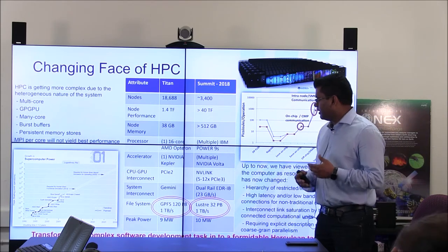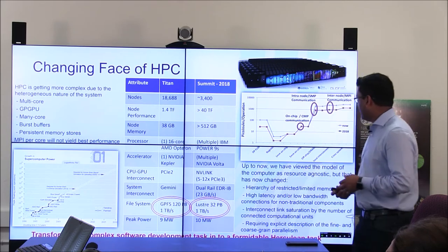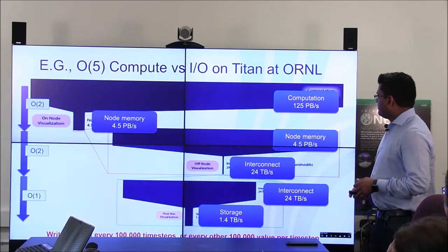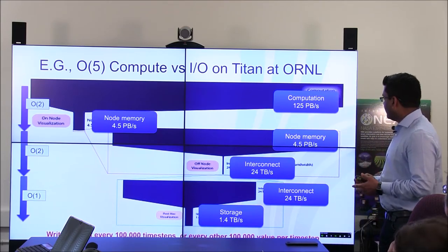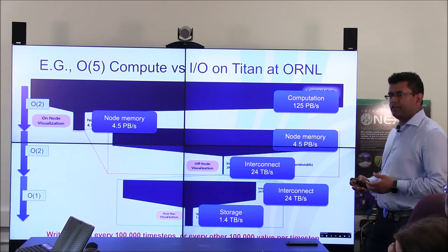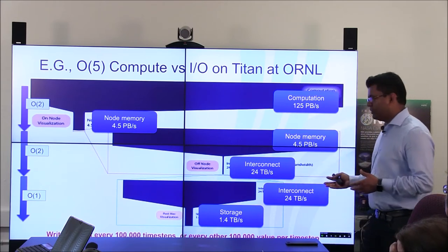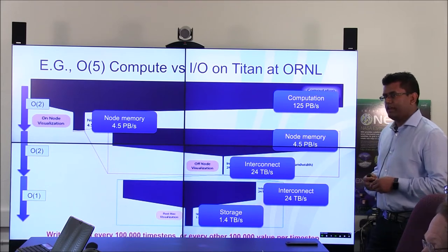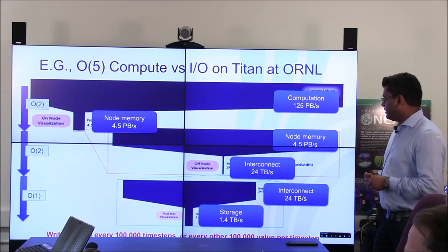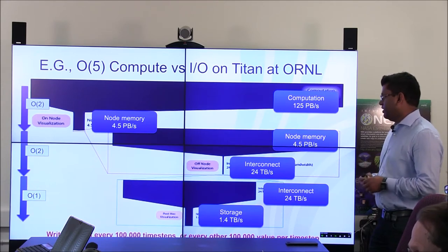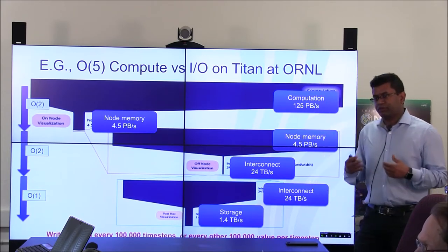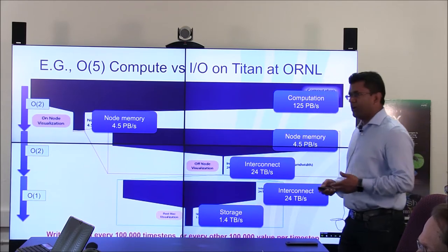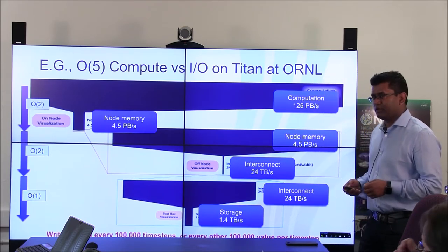So now we have multi-core, GPUs, many-core, burst buffers, and processing in-memory stores. This is basically transforming how we've been doing these analyses, because before we used to do post-hoc processing — you run all the simulation, store data somewhere in storage, and then do analysis or visualization afterwards. With recent hardware changes and simulation advances, we have data which is too big to move or store.